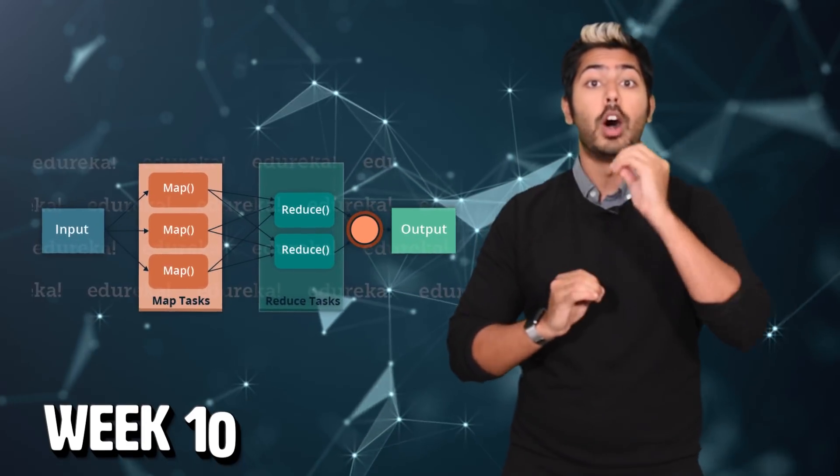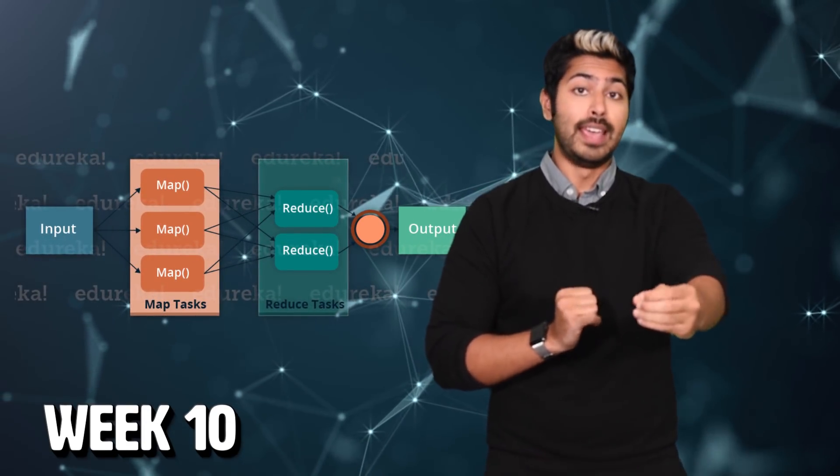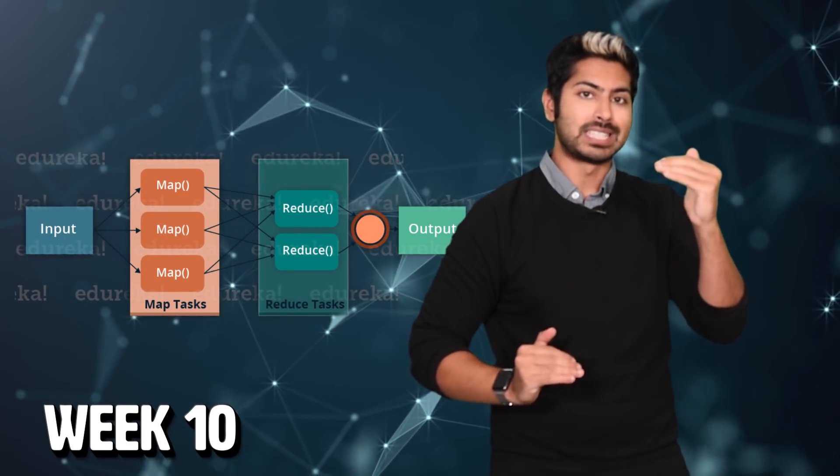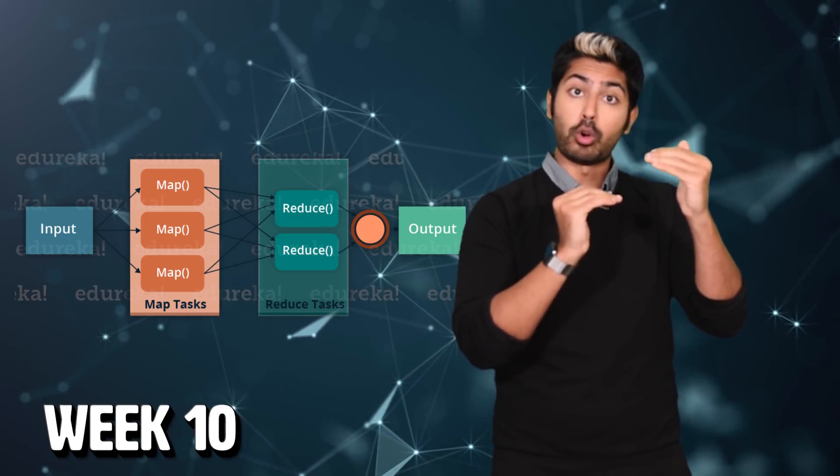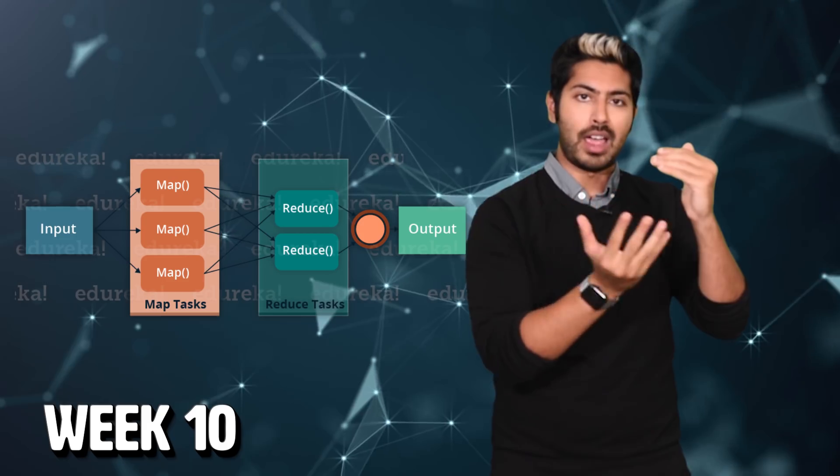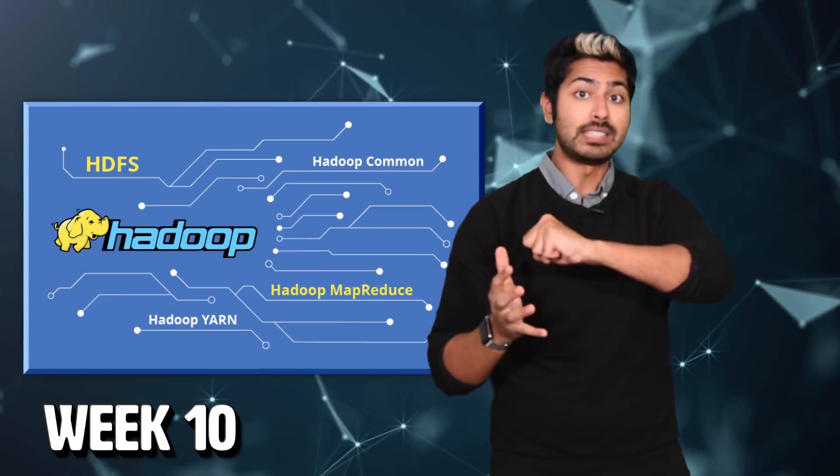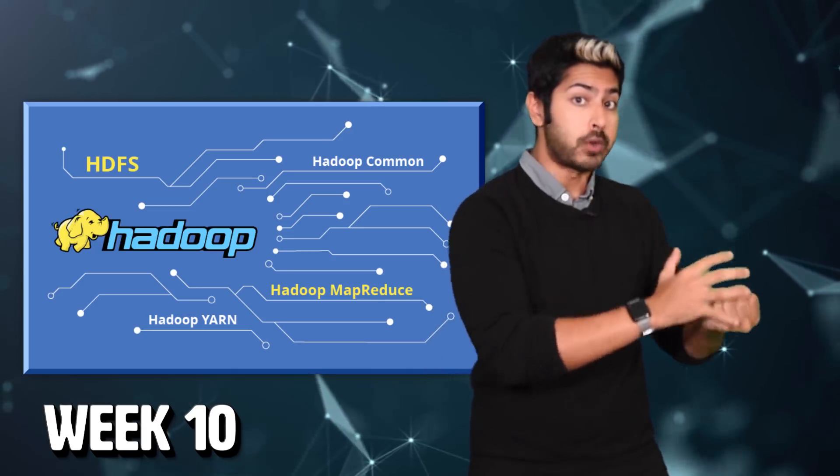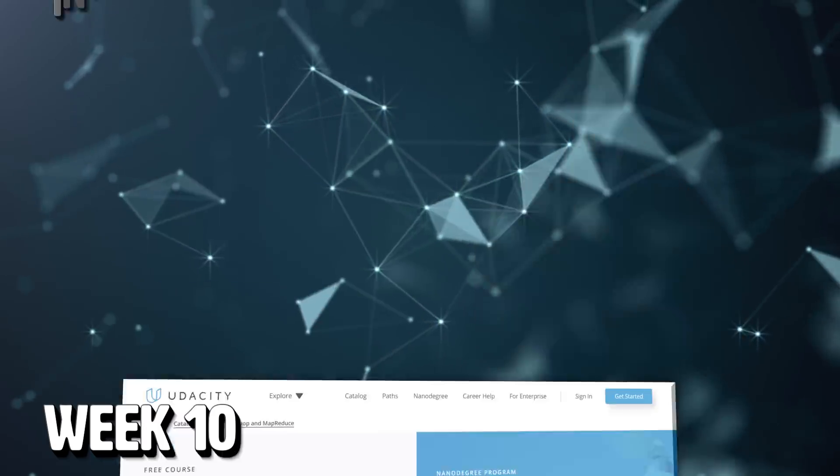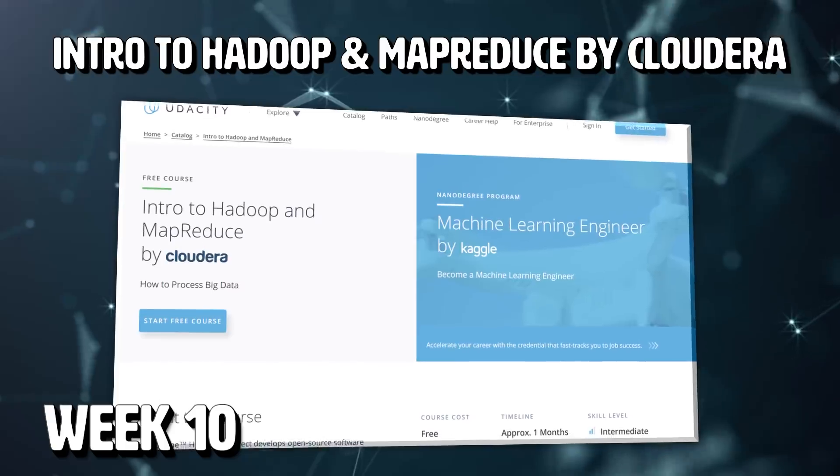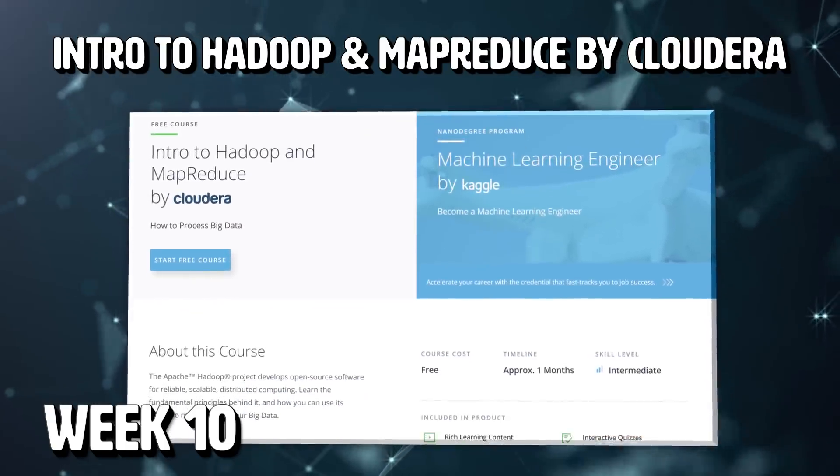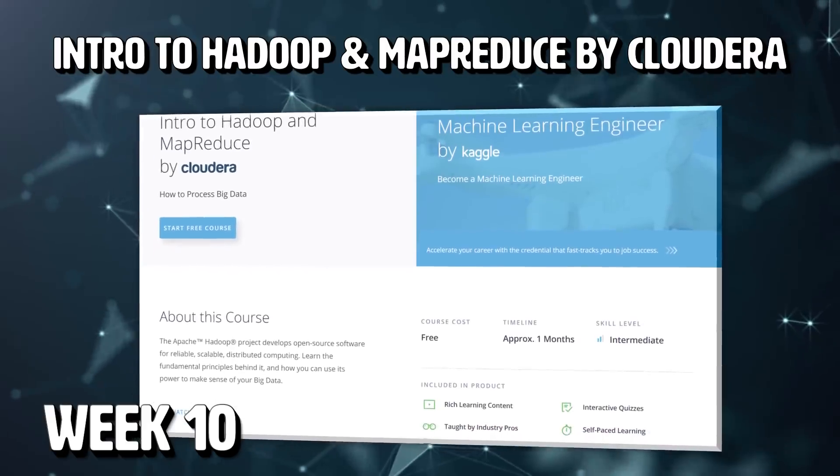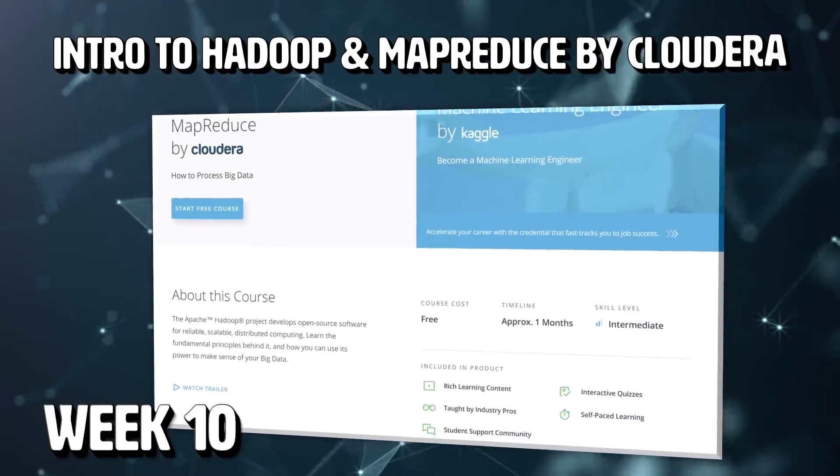For week 10, we'll move on to Hadoop and MapReduce. As Google grew, it had to index more and more data, over a billion pages of content. And in order to cope, they invented a new style of data processing known as MapReduce. Hadoop was created to apply these concepts to an open source framework that anyone could use. Data scientists use MapReduce to process data frequently. And the intro to Hadoop and MapReduce by Cloudera course on Udacity is the perfect way to get familiar with these concepts.